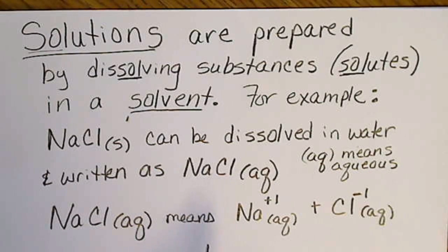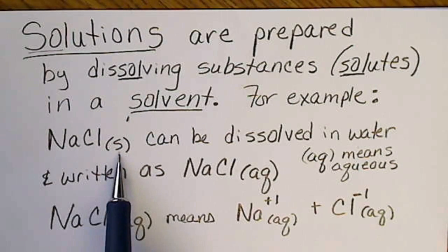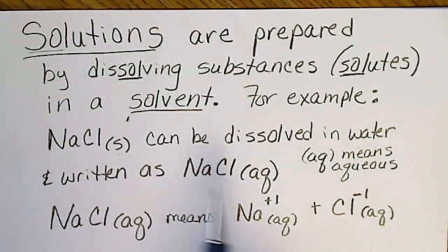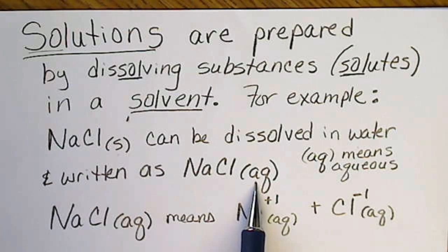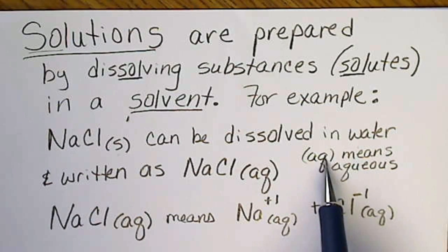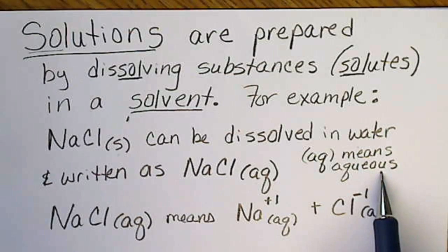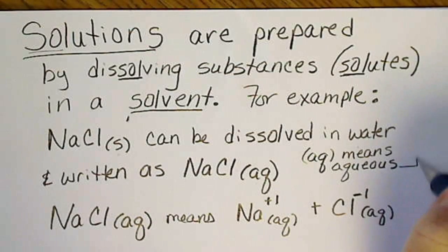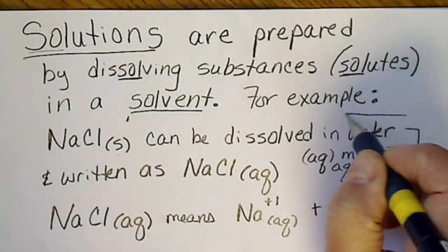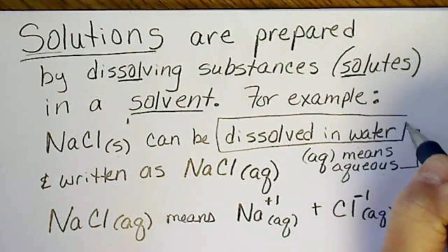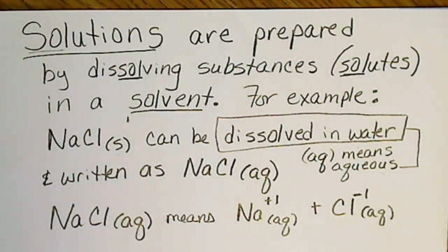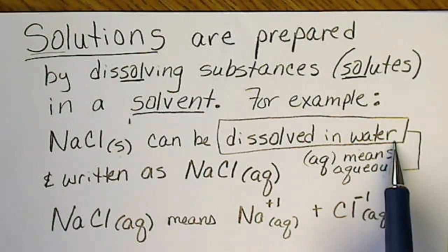The way we would show that chemically, instead of writing the S for solid, we would write AQ after that. AQ means aqueous. Aqueous automatically means that water is the solvent. There are lots of different solvents, for example paint thinner is a solvent. But in this chapter, the solvent is always going to be water.